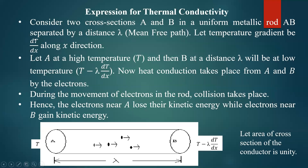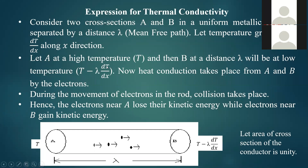If you change the distance by dx, there will be a change of temperature by dT, so dT/dx is the temperature gradient. The distance between point A and point B is lambda, the mean free path of the electron. Let A be at high temperature T. Then B, which is at a distance lambda, will be at temperature T minus lambda times dT/dx, because temperature is decreasing from point A to point B by an amount equal to distance times temperature gradient.